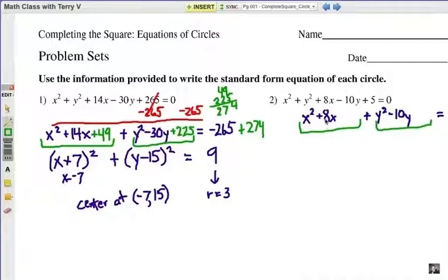Half of 8 is 4, and square it, 16. Half of negative 10 is negative 5, and square it, it's going to be 25. Now remember, in green here, I added a total of 41, so I better do the same on the opposite side.